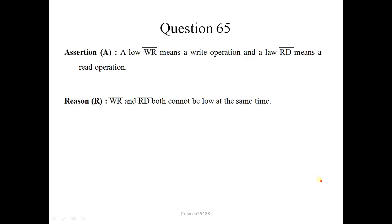Question number 65. A low WR means a write operation and low RD means a read operation. This is correct statement because these are active low signals. WR bar and RD bar both cannot be low at the same time. This statement is also correct but there is no relation with the assertion. This cannot be low at the same time because it is distinguished by the instructions which are executed. For example, if IN instruction is executed, it means the data is read from the input-output device. And when OUT instruction is executed, it means data is written to the input-output device. Correct option is 2.